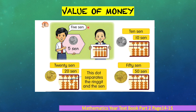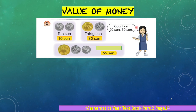Now, value of money. Look at five cents on the abacus — how it looks. Here are 20 cents, 10 cents, and 50 cents. The ones place value is for cents, and the tens place value is for higher cents. The dot separates the ringgit and the cents — for example, one cent, ten cents, dot, then ringgit, ten ringgit, and so on.